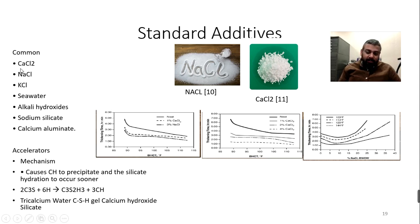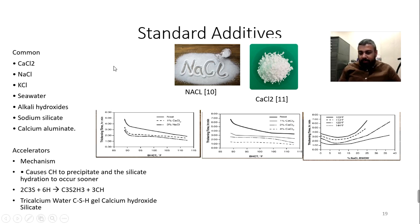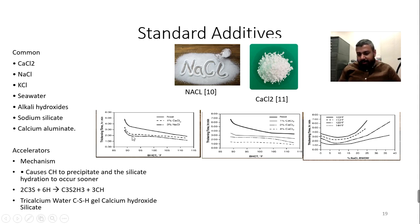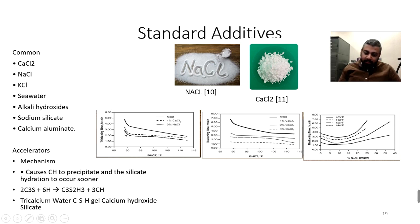The common standard accelerators are sodium chloride (NaCl) and calcium chloride (CaCl₂). These are used for surface casing and conductor pipe — low-temperature applications — to accelerate setting time. For example, at 90°F, with 3% sodium chloride added, you can see the thickening time is reduced: cement that previously needed five hours to set now needs only three hours.